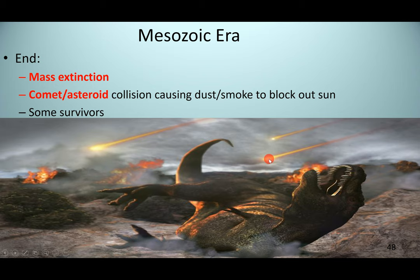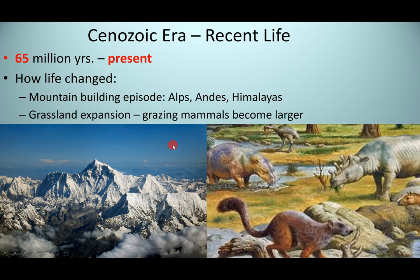The Mesozoic era ended with another mass extinction, and we do know how this one occurred — a comet and asteroid collision caused a huge amount of dust and smoke to block out the sun. With no sunlight, the plants died off, and the organisms that depended on them couldn't survive. Some organisms survived, but most didn't. Many of the mammals survived, but the dinosaurs did not.